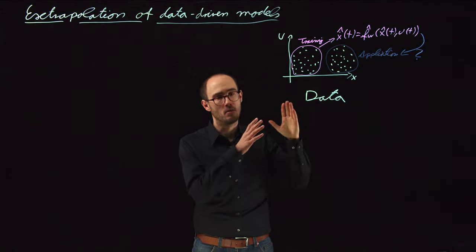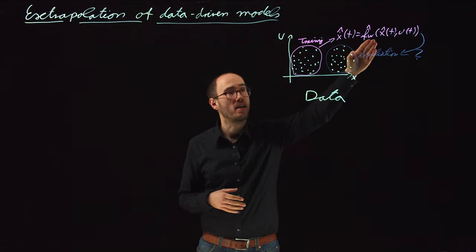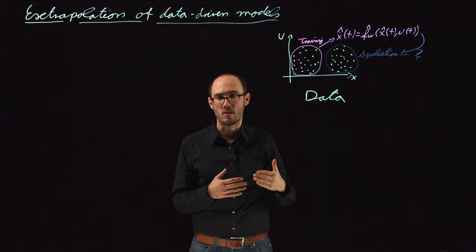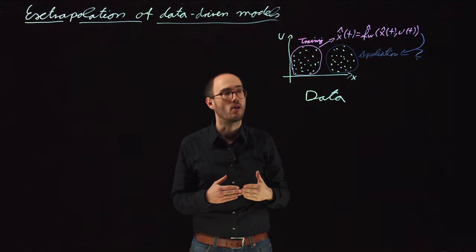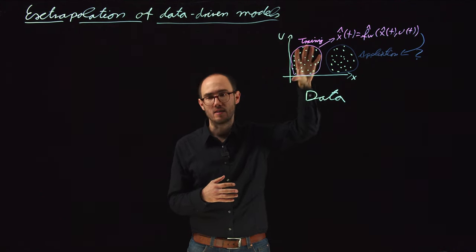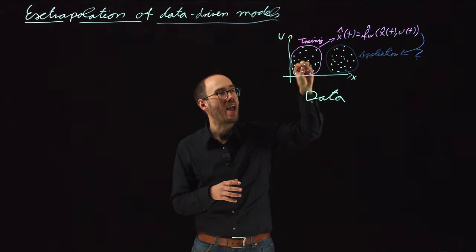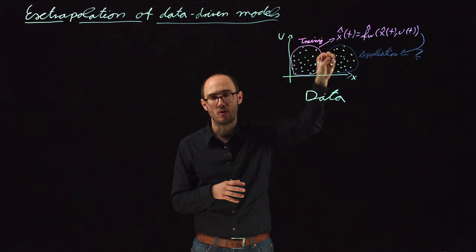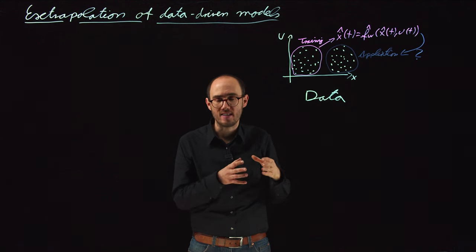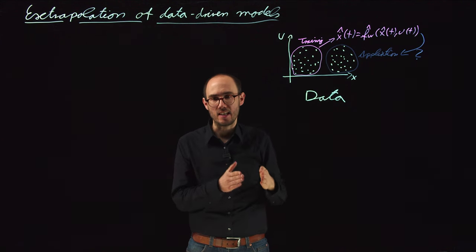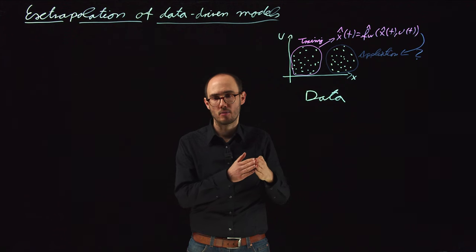In a more black box model, where this right hand side is structurally unknown, or partly structurally unknown, of course, the use data will also shape the structure itself. And if we extrapolate the model into an operating domain which has been not seen before, that can lead to systematic prediction errors.